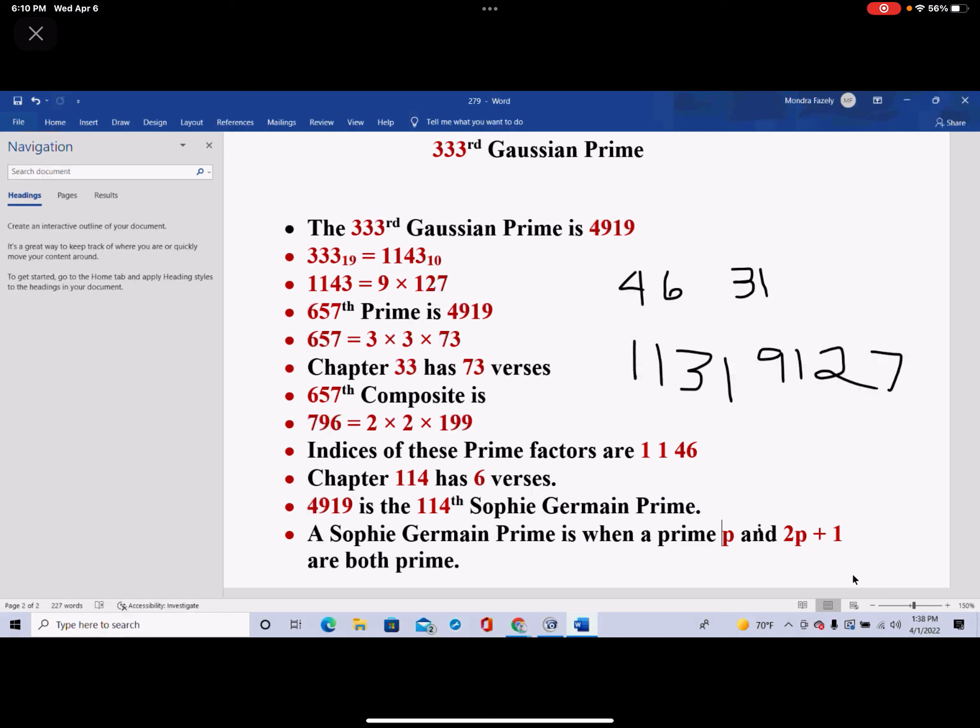11, on the other hand, is Sophie Germain prime, because 11 times 2 is 22, plus 1 is 23, and 23 is a prime number. So that's how it works.